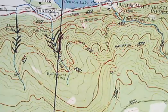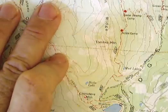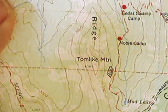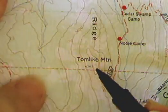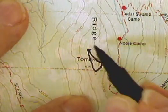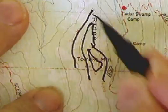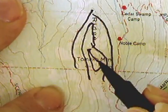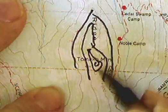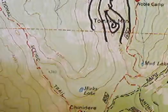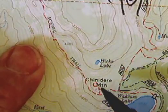Now let's look at what things look like near a mountain peak. Let's zoom in a little bit. At the top of Tomlike Mountain, you see the contour lines are going around and around — they kind of circle the peak. That's the signature of a peak. The highest point is here, and then this is a little bit lower, and this is a little bit lower. There's also another peak nearby which has its own circles.